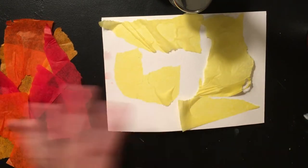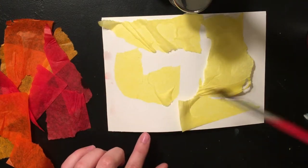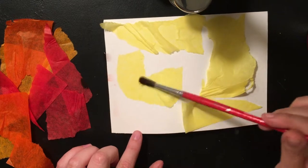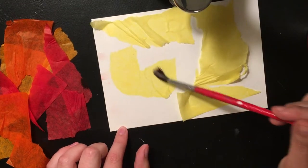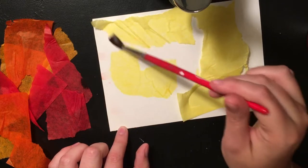Once you've placed them how you want to place them, you're going to go back with your paintbrush and put more water on top. This is going to help really saturate your page.